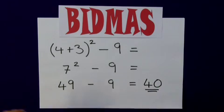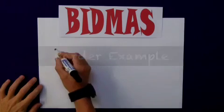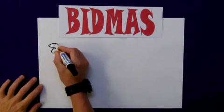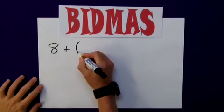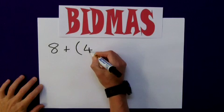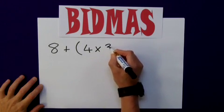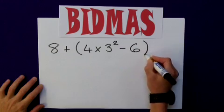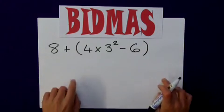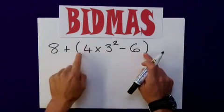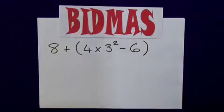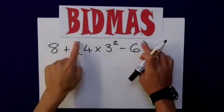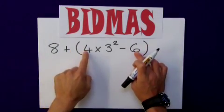And using BIDMAS, that's correct. Let's consider a more complex question now. 8 added 2, open brackets, 4 multiplied by 3 squared, minus 6, close brackets. Now, the added problem of this is that I have several operations to do within the brackets. The best thing to do here is, indeed, to take the brackets as a separate entity.